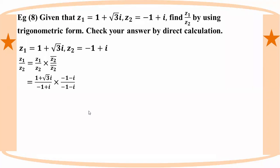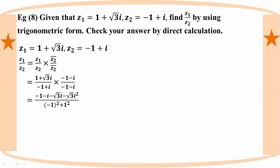Let me compute: x squared plus y squared. Here x is minus 1 and y is root 3 i, meaning minus 1. So: minus 1 times minus 1 minus root 3 i, giving minus 1 minus root 3 i. Expanding: one minus root 3 i, minus root 3 i, minus i squared equals minus 1, which gives plus root 3. Result: root 3 minus 1 minus root 3 i.